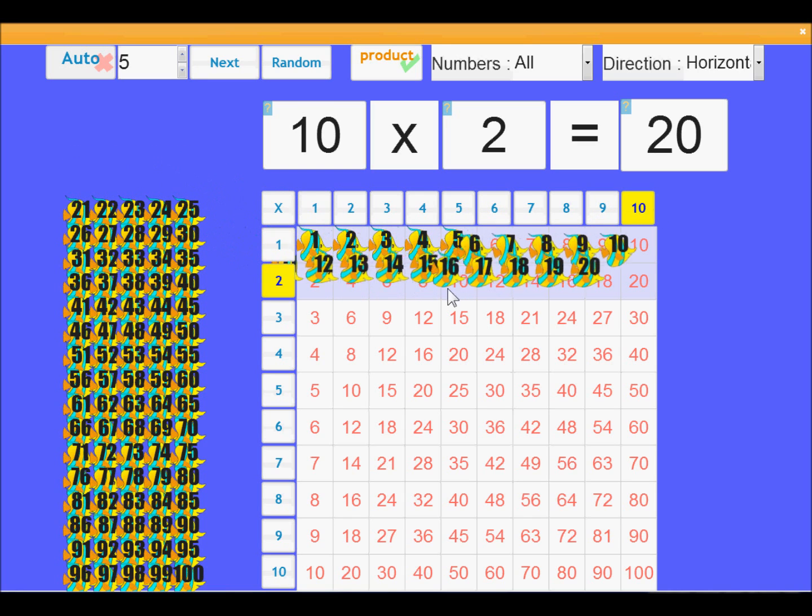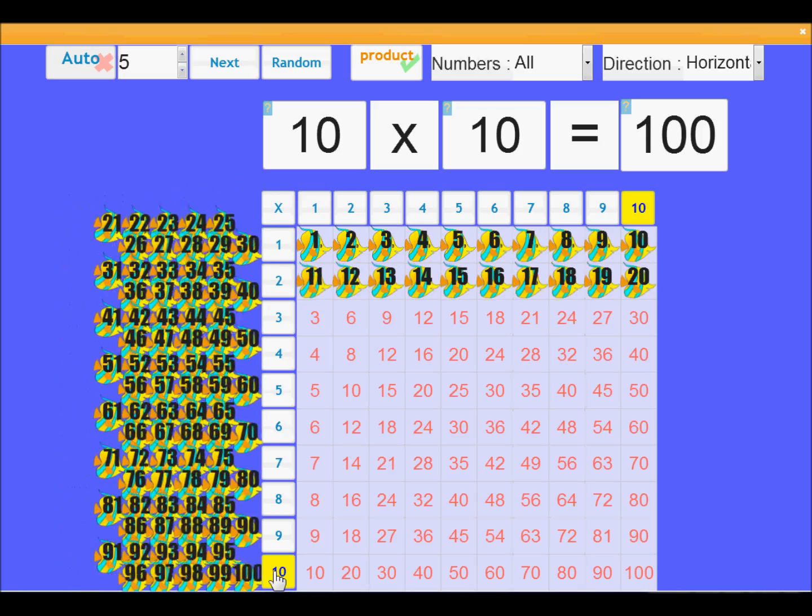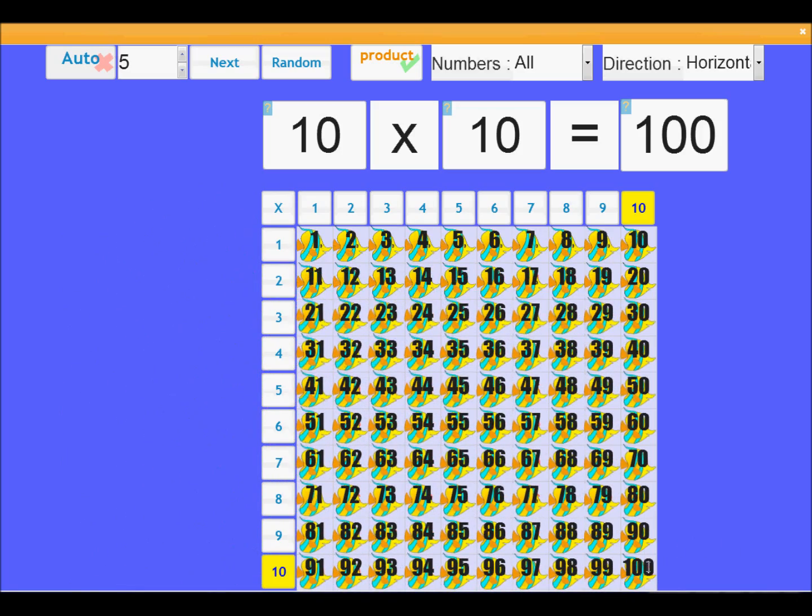This square has a product of 10 times 10, maximum, which means in total we have 100 fish, each numbered from 1 to 100.